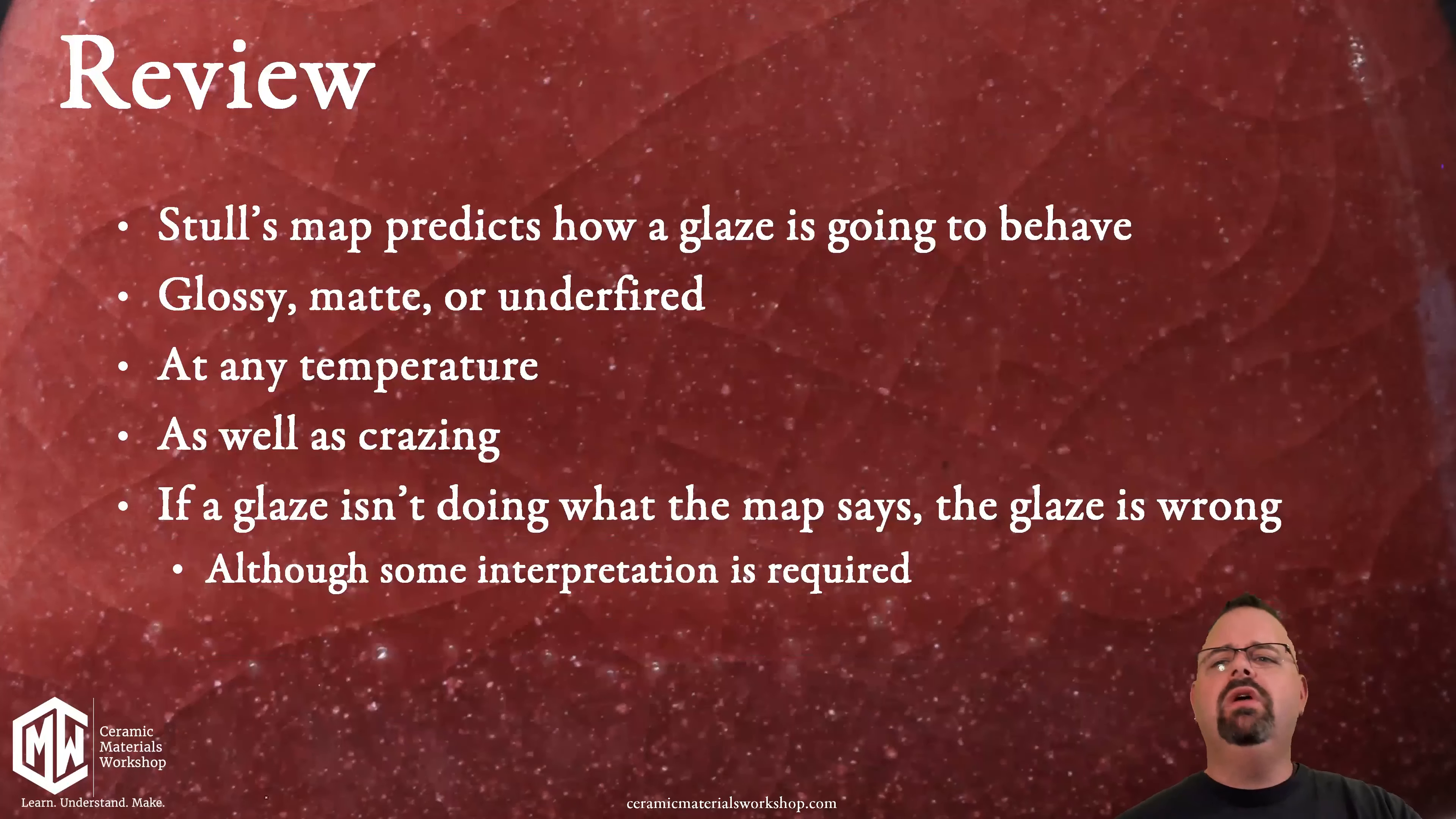But for now in review, Stull's map predicts how a glaze is going to behave - glossy, matte, or under fired at any temperature as long as we understand the tools of temperature that we're going to get to in a future segment. As well as things like crazing and starting to learn to interpret our place on the map. Because if there's a major discrepancy between what the map is saying and what you're getting something is wrong. But of course through all of this interpretation is required as a skill to make the most of the map. And we're going to learn that in future segments.